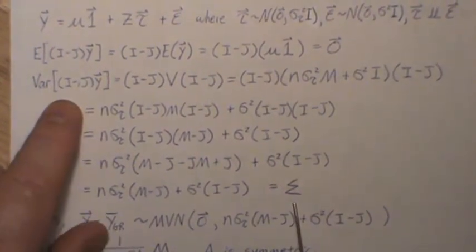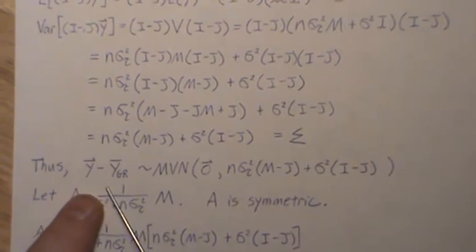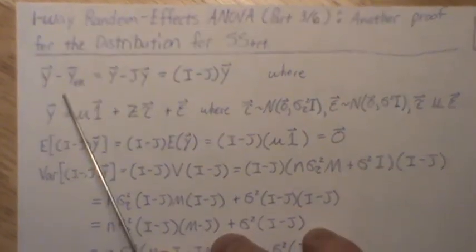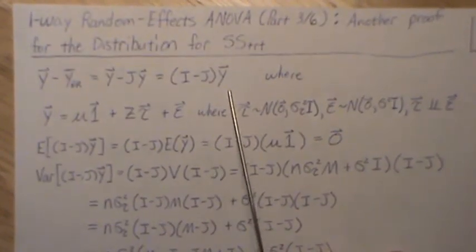Now let's call this sigma. So this is the variance-covariance matrix associated with (I - J)Y. Now let's look, so that tells us that Y minus the grand mean, that's the linear combination of the Y's, has this mean and this variance.